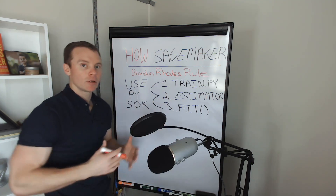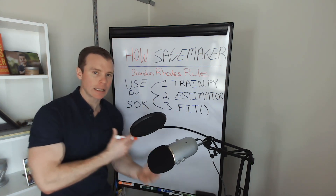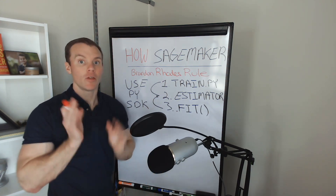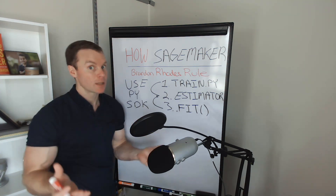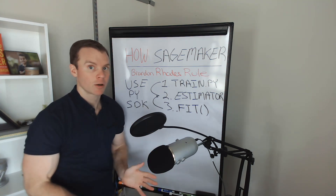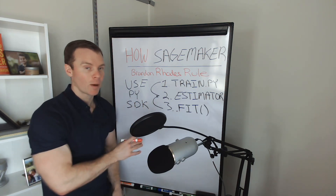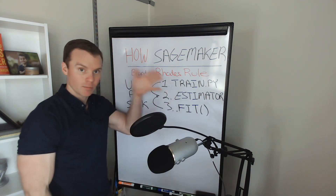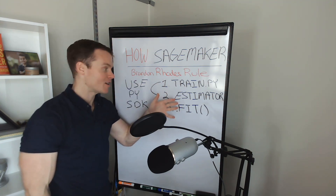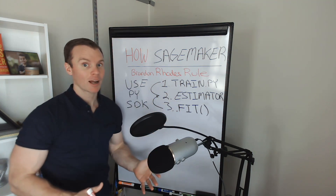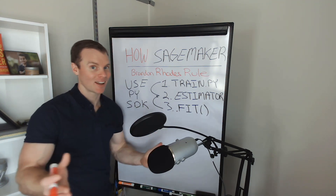The core idea is: how do we use SageMaker? There are so many different ways to get started, and I see a lot of confusion there. Those are great tools, but they're unnecessary for someone getting started or thinking about this from a software engineering perspective. You have a Python package — install it, start building, build your train script, create and instantiate your estimator, call .fit. You're rocking and rolling, and we can do this from anywhere: local machine, CI server, etc.